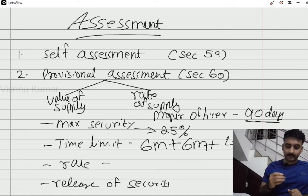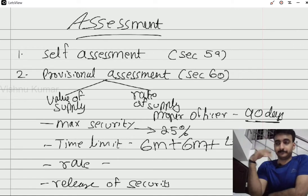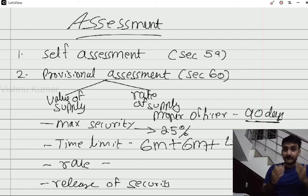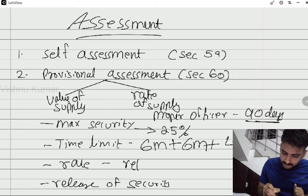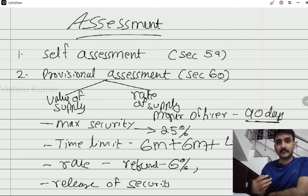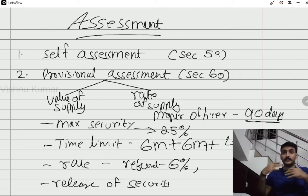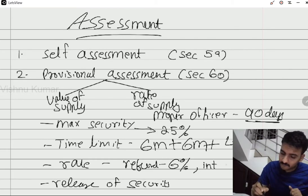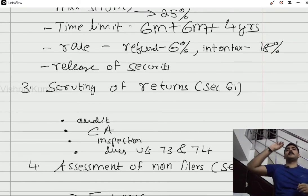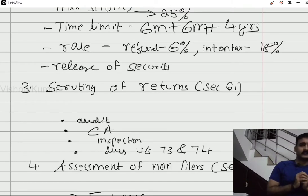In the case of provisional assessment, there are interest rates to consider. If there is a refund, interest will be lower; if there is tax to be paid, taxes will be 18%. Everything has a logic — GST is a very logical act.